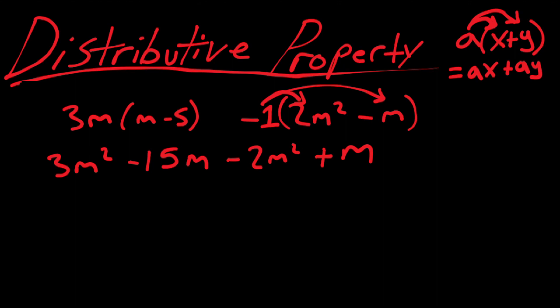Now we can do our magic and collect like terms. So we have 3m squared minus 2m squared, that just leaves us with m squared. And then we have negative 15m plus m which leaves us with negative 14m.